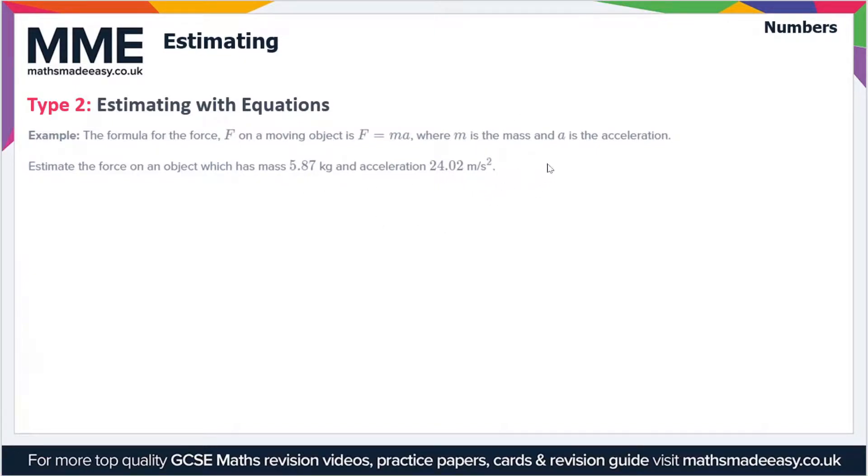Let's just rewrite the equation first of all, so that's F equals ma. So m is the mass, the mass is 5.87 kilograms, and the acceleration is 24.02 meters per second squared.